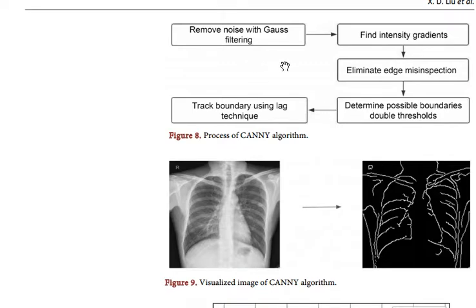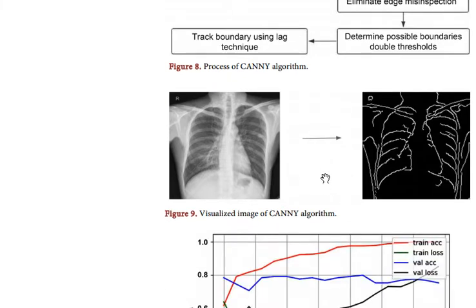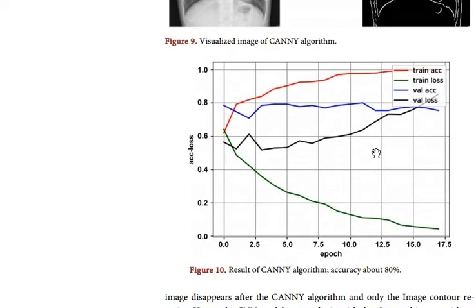The process of the Canny algorithm involves: removing noise with Gaussian filtering, finding the intensity gradient, eliminating non-maximum edges, non-maximum suppression, and determining the possible boundary with a threshold. Then track the boundary using a hysteresis technique. A visualization of the Canny algorithm image is shown in Figure 9, and the result of the Canny algorithm shows improved accuracy.